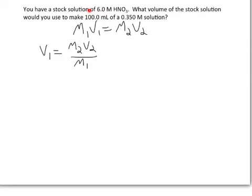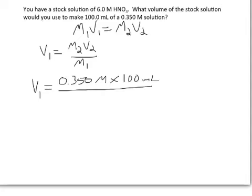So when I plug in the values with the units, I have M2 is 0.350 molar times the volume of 100 milliliters, and I'll divide that by M1, which is 6.0 molar. So we can see when we check our units, molarity cancels with molarity, so my final answer is going to be in milliliters.